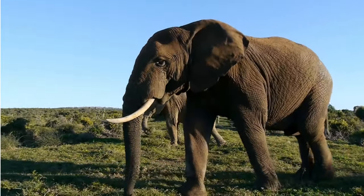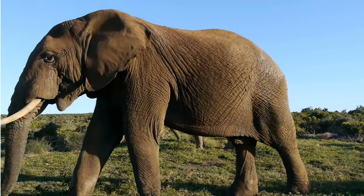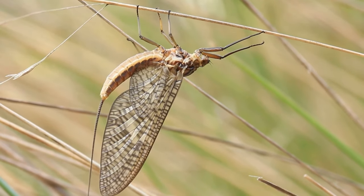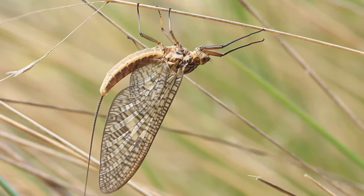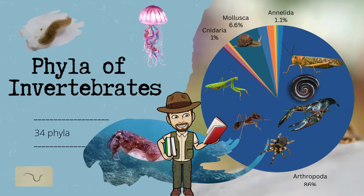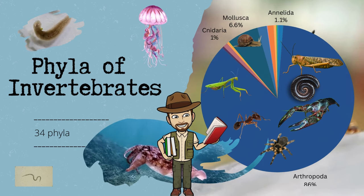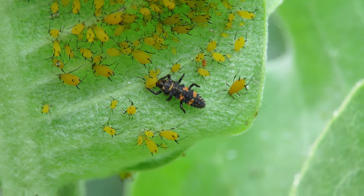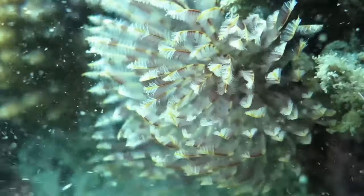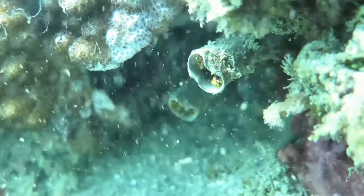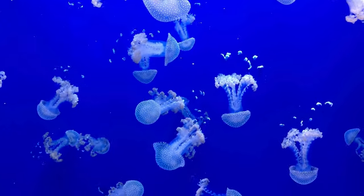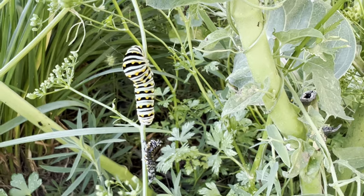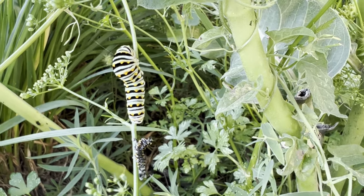But the truth of the matter is, over 95% of all animal species are invertebrates, and most of those belong to only 8 phyla. There are 34 phyla of invertebrates, some only containing a single species, while another phylum contains nearly 85% of all animal species in the world. Today, we are going to concentrate on the major characteristics that make an invertebrate an invertebrate, and we'll be looking at those 8 most common and recognizable phyla of invertebrates.